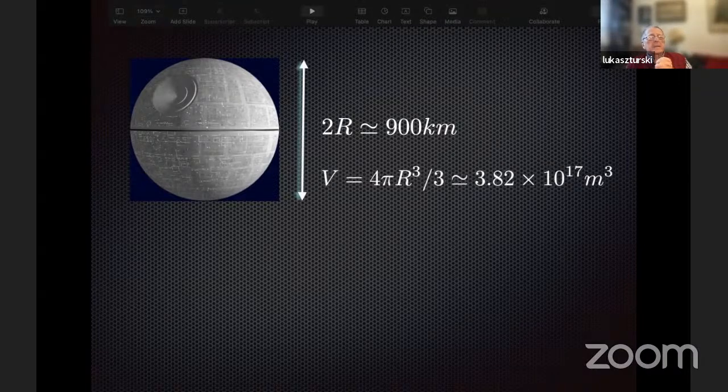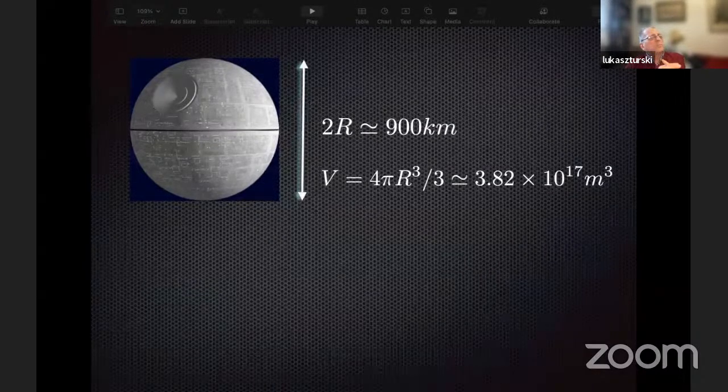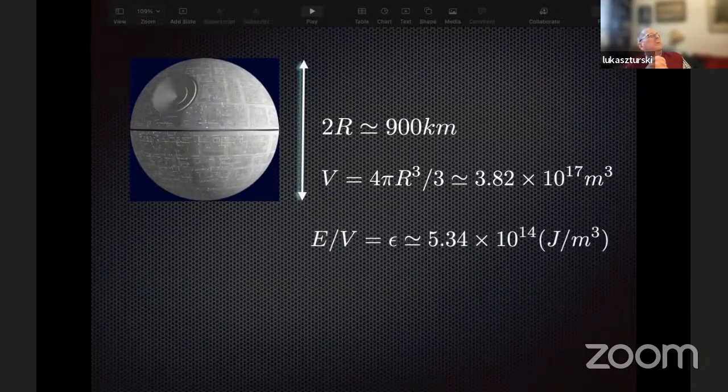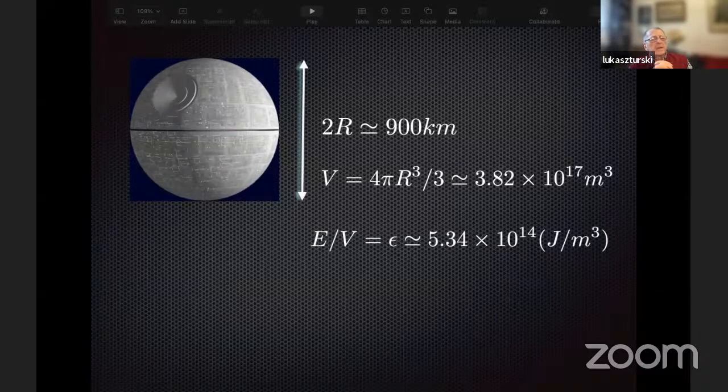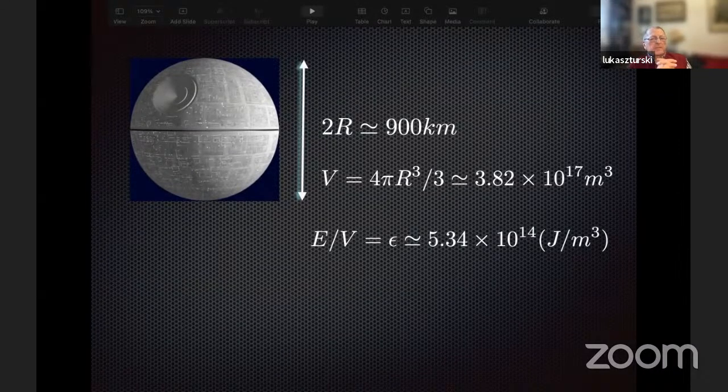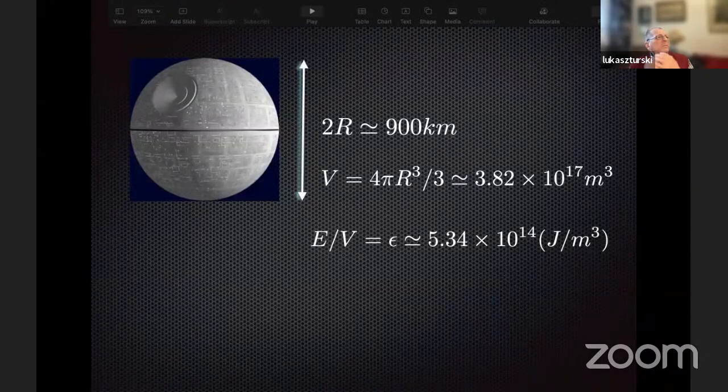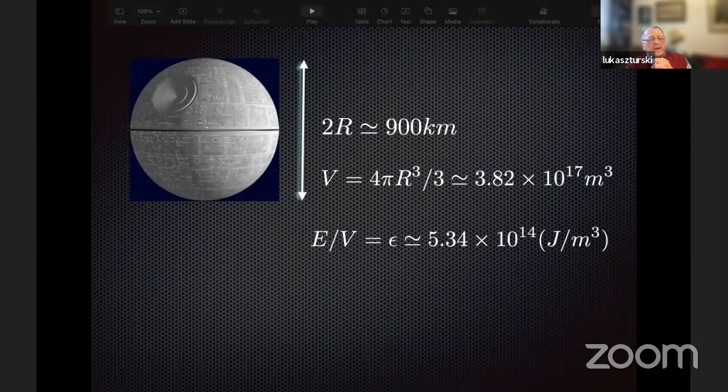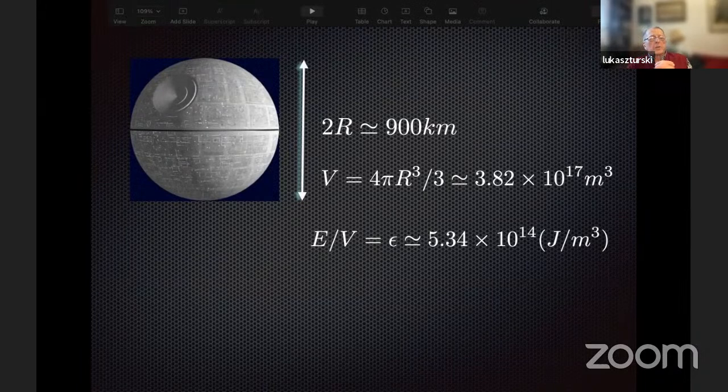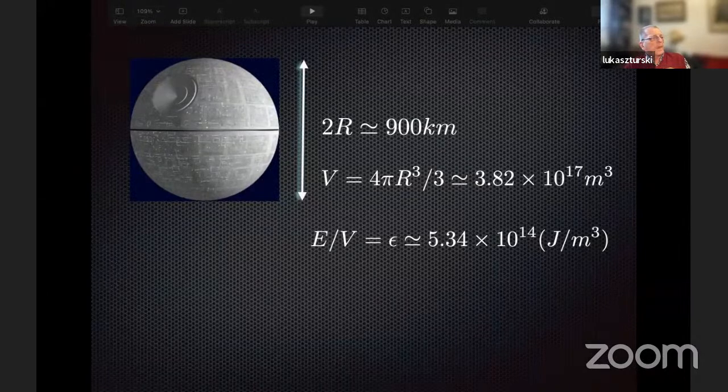I have to store that energy inside of the Death Star somehow. If I store it in the Death Star, which has a volume of the order of 10 to the 17 meters cubed, then I can calculate the quantity which is of great importance. This is the energy density. That, of course, is the energy divided by the volume.